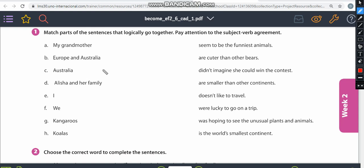So letter B. Europe and Australia. Plural form, so we are not going to change the verb or use does instead of do. Let's take a look. Let's take a look. Seem to be the funniest animals, are cute or didn't imagine. Are smaller, pay attention, than other continents. Perfect. Continents, Europe and Australia. Are smaller than other countries. Let me try to do this right. Oh my god. Here it is.